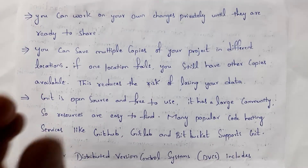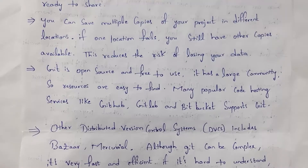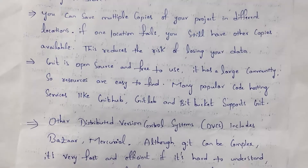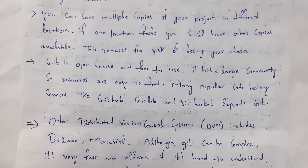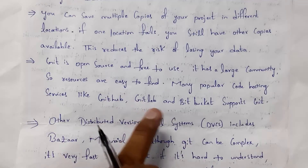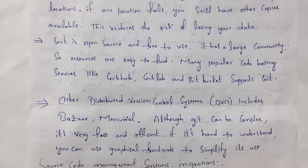Your files are only accessible to all employees once you share that code on GitHub. Until then, your Git software remains private and secure. For example, if you are developing a project, you can store multiple copies of it in different locations in Git. If you unexpectedly delete one copy, the remaining copies are still available, so there is no loss of data. Git is also open source — you can download it for free.